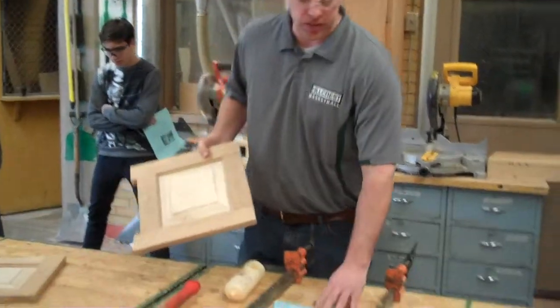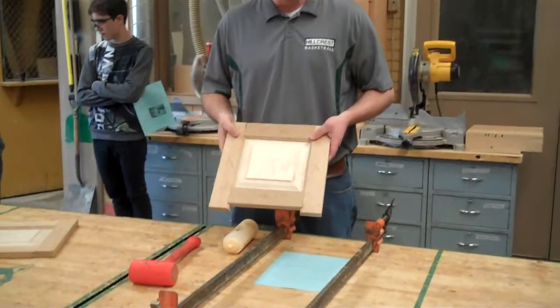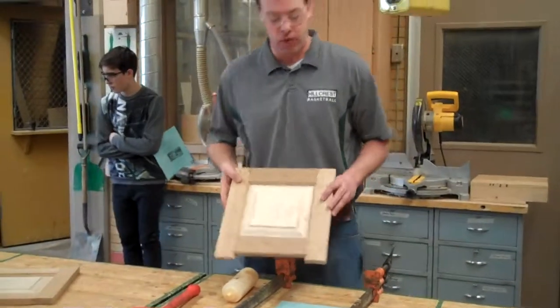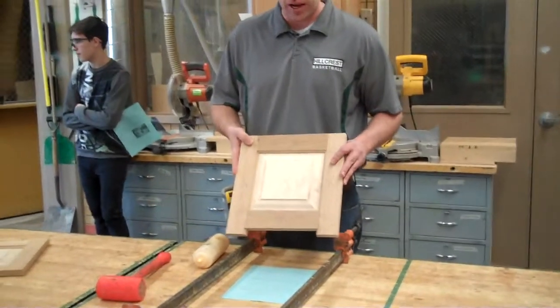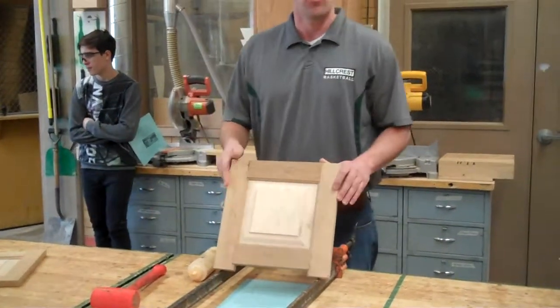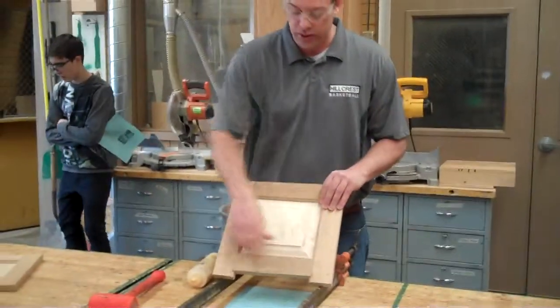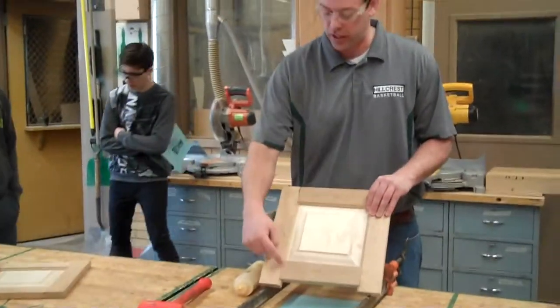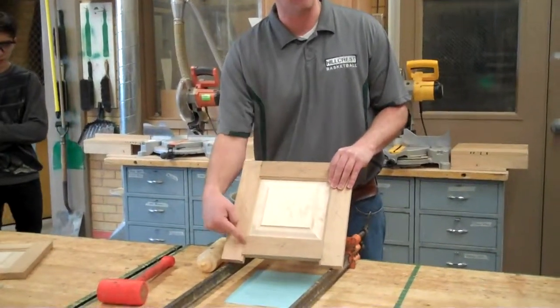It says on your paper, get your two end panels from the previous procedure, we've got those, and then glue these together by only putting glue on the ends of the rails. This will allow the panel to float, which allows for expansion and contraction of the panel. When we're gluing this together, we want to make sure absolutely we do not just glue the entire thing together. We're only putting glue where the rail and the style meet together.